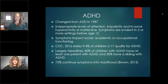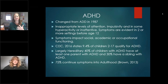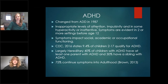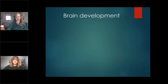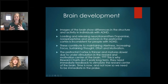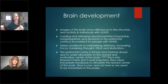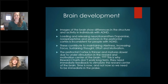40% of children with ADHD have at least one parent who also has ADHD, and 30% will have a sibling with it. Research shows 75% of these people continue to have symptoms into adulthood. When we look at brain development, images show differences in structure — particularly in the loading and releasing of neurotransmitters: dopamine, norepinephrine, and serotonin. We need these for alertness, focus, and sustained effort. The prefrontal cortex is thinner and matures a lot slower.